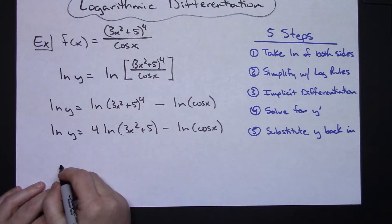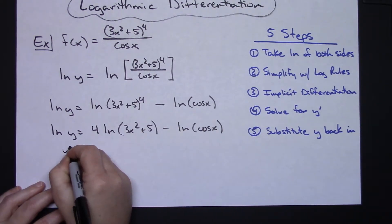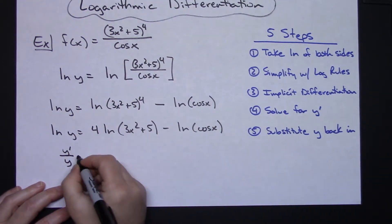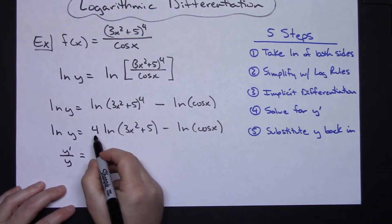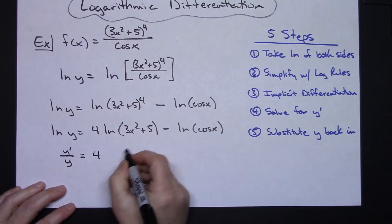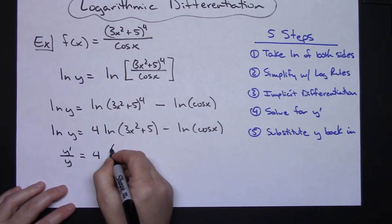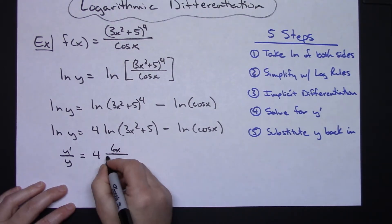So this natural log of y when I take the derivative will be y prime over y. That's u prime over u because my u is y. I'm going to leave the 4 sitting right there. Now u prime over u, so derivative of that inside function would be a 6x over the u on the bottom, 3x squared plus 5, minus